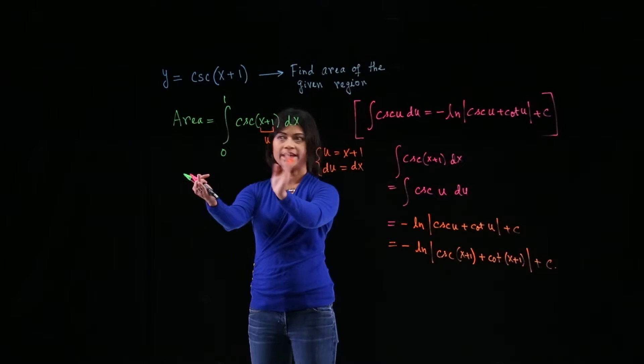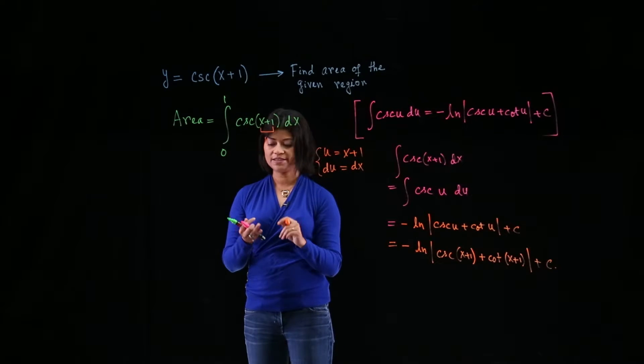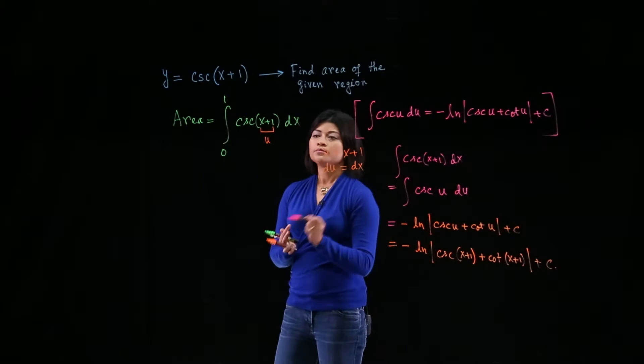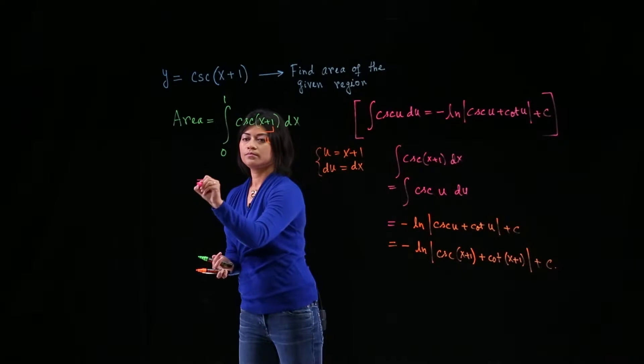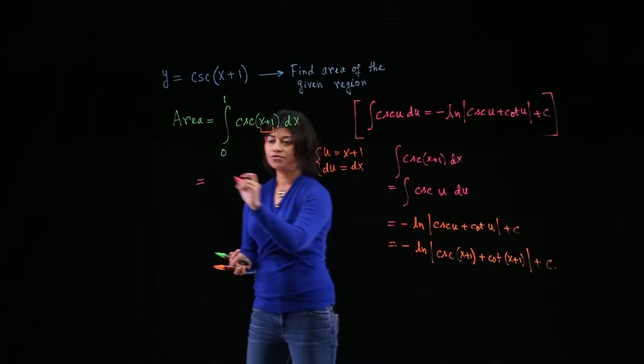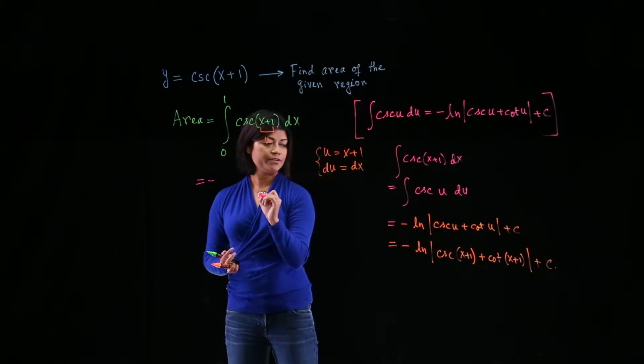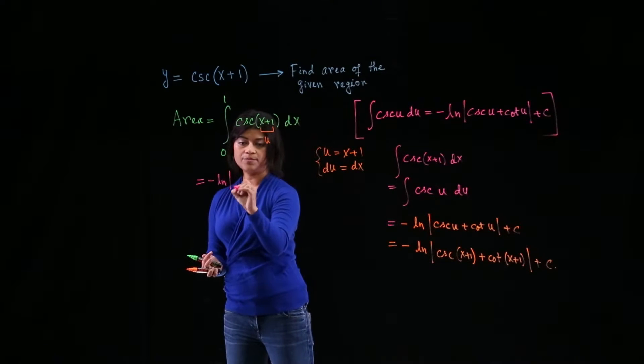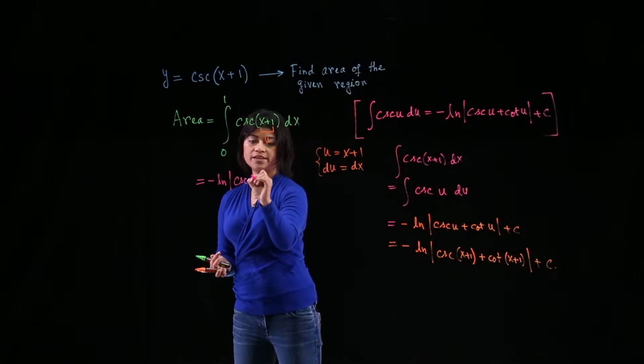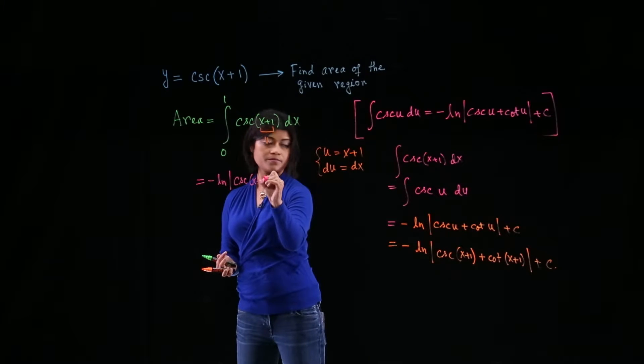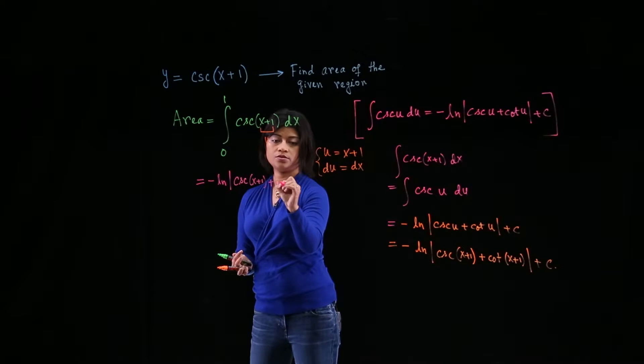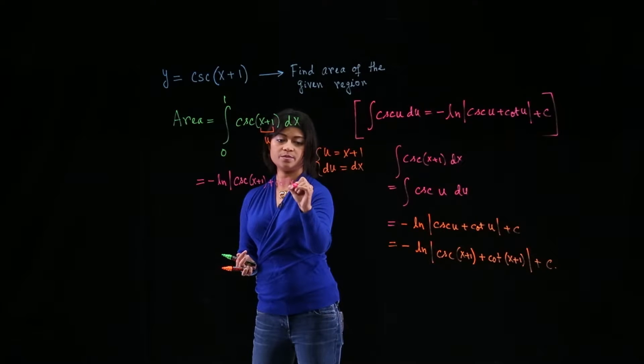We just have to bring it here and then plug in our limits. So let's write it down one more time. Antiderivative is negative natural log absolute value cosecant x plus 1 plus cotangent x plus 1.